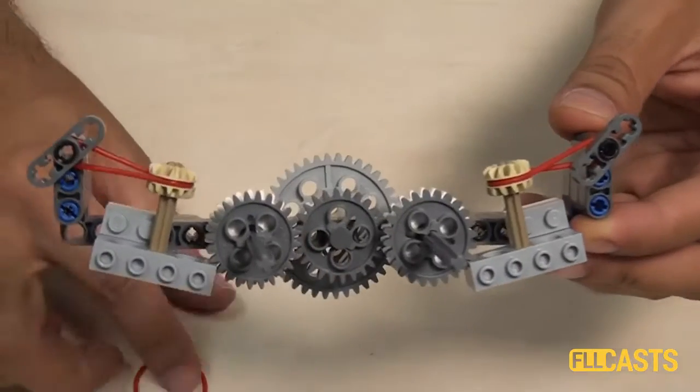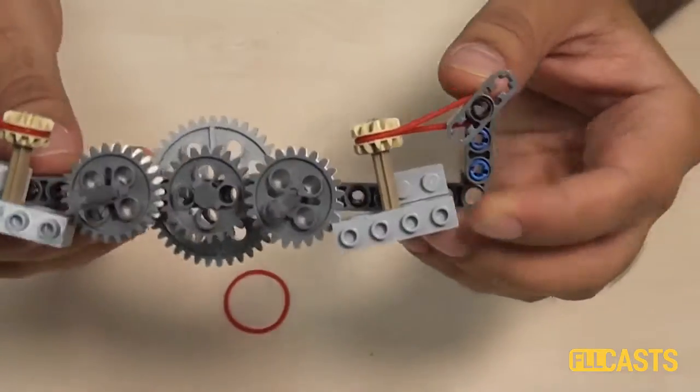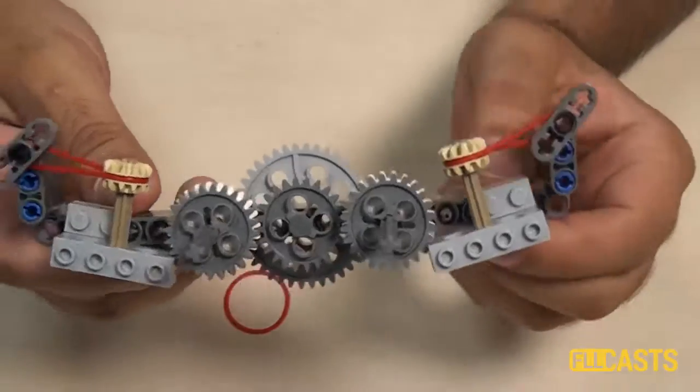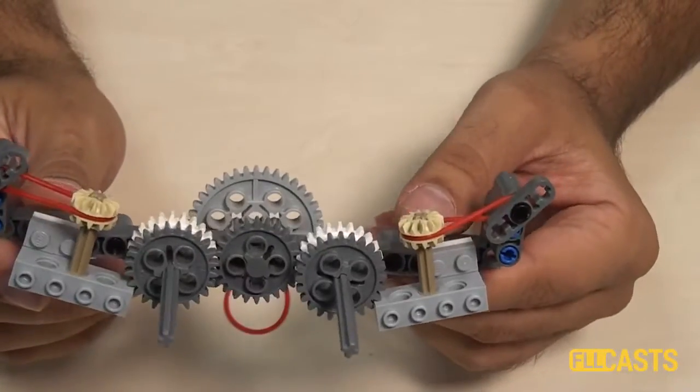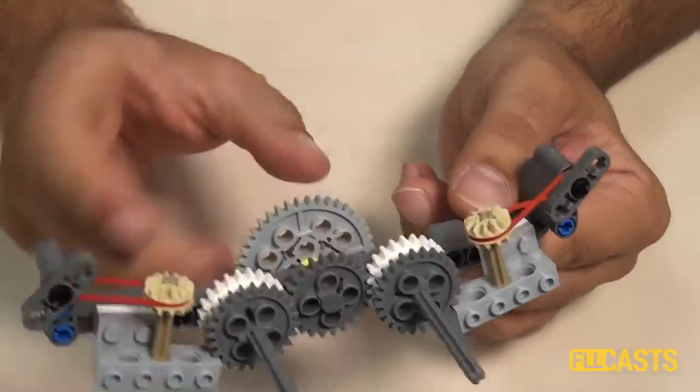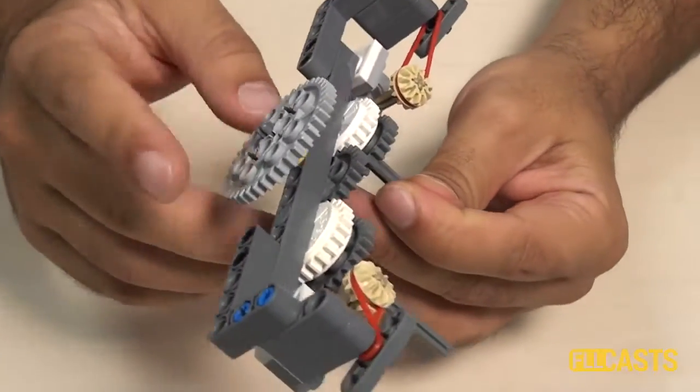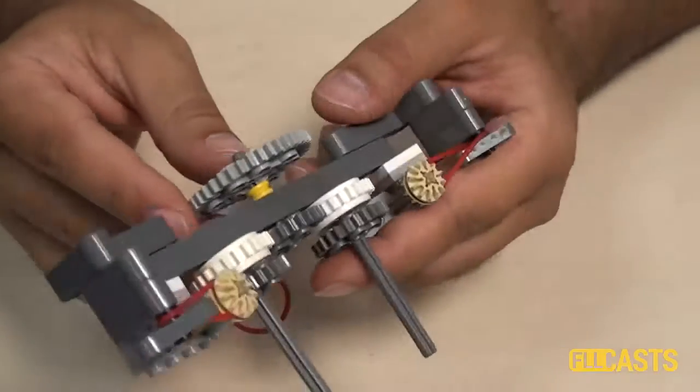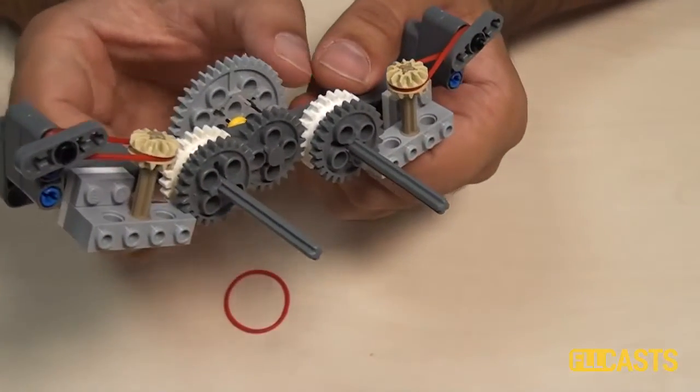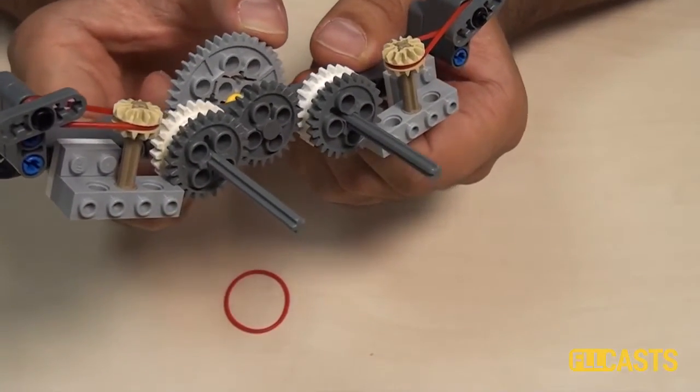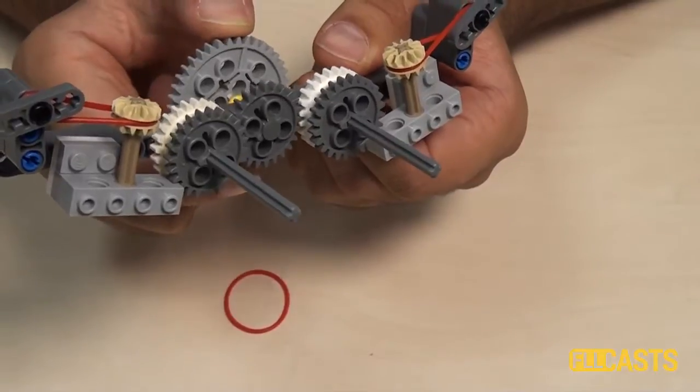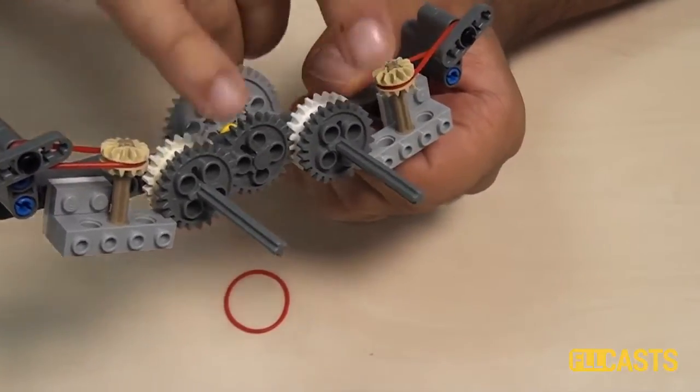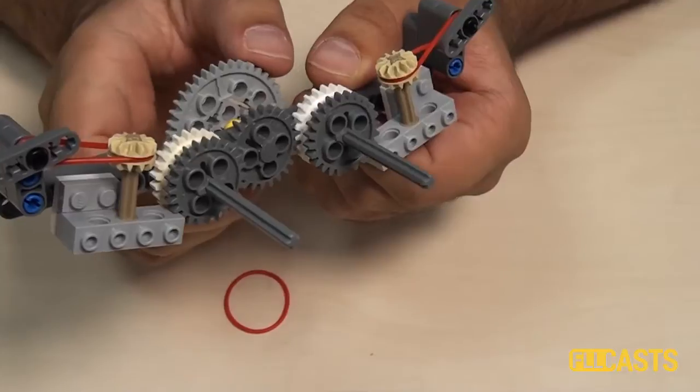This here is the attachment and again it uses rubber bands right here. The purpose of the attachment is the following. When you rotate the gear wheel right here, for example, this here is connected to a motor, and now when I rotate the gear wheel, only one of the axles of these two axles, only one of the axles actually rotates.